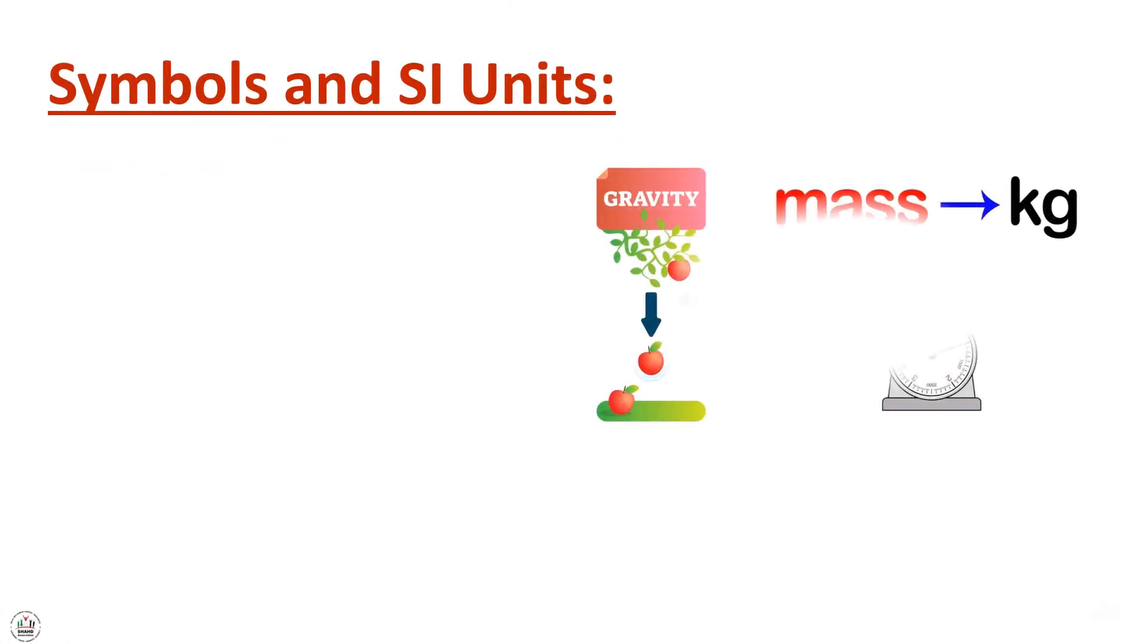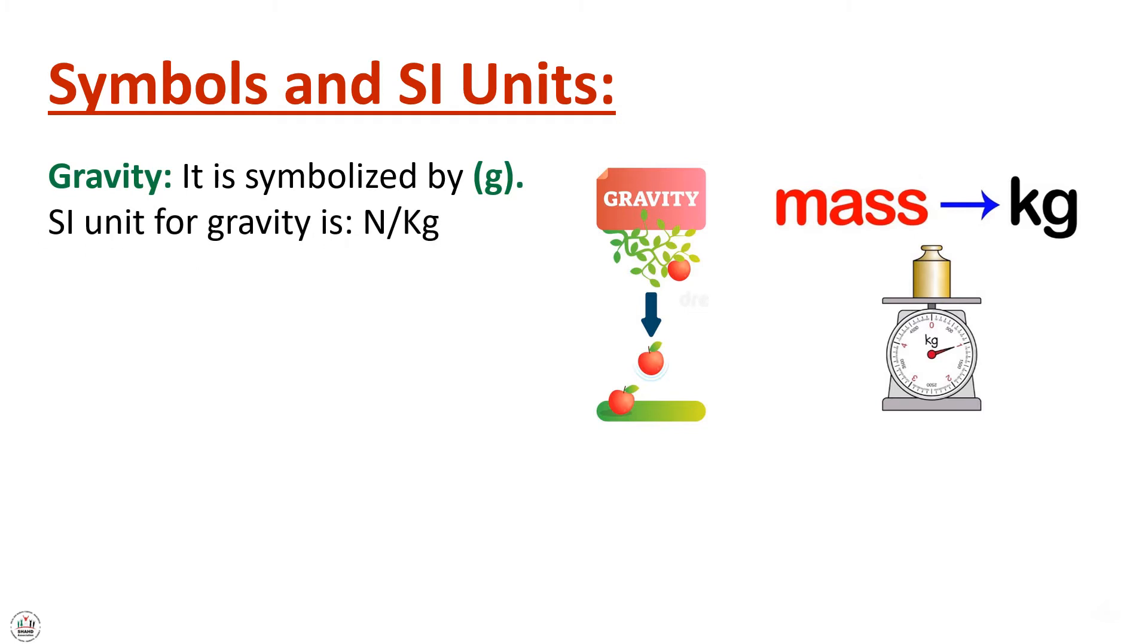Now, symbols and SI units. Gravity is symbolized by G. The SI unit for gravity is newton per kilogram.